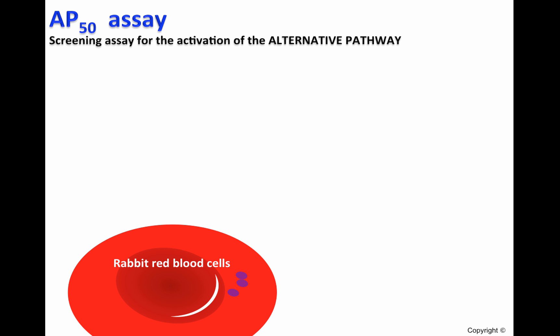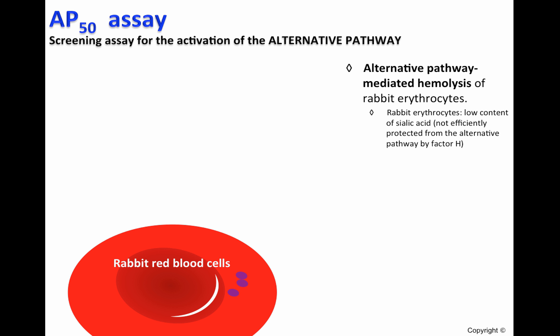The AP50 is another assay used to detect certain alternative pathway deficiencies. In the AP50 assay, rabbit erythrocytes are used. The reason is that these red blood cells have low content of sialic acid, which means that factor H — a molecule that protects cell surfaces from alternative pathway-mediated attack — can no longer bind to the red blood cells, and therefore the AP activity can be assessed.